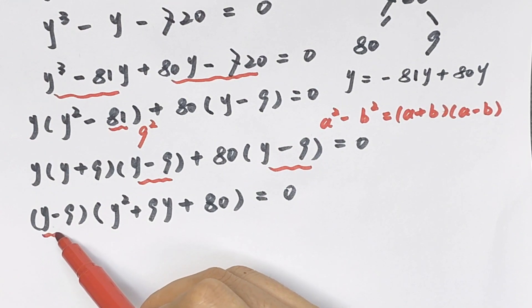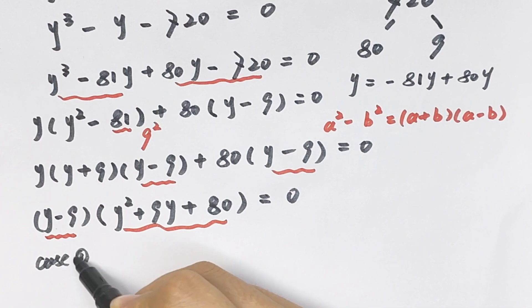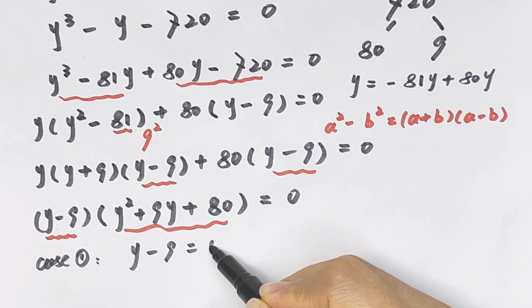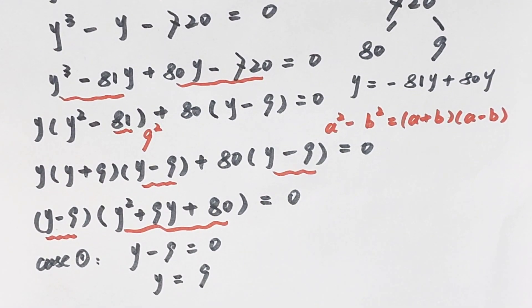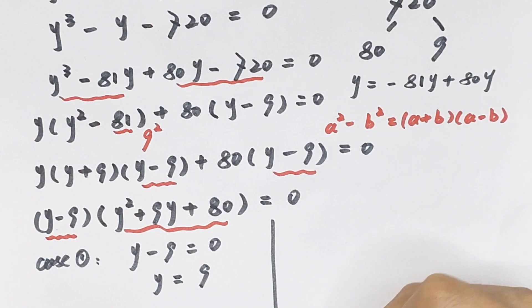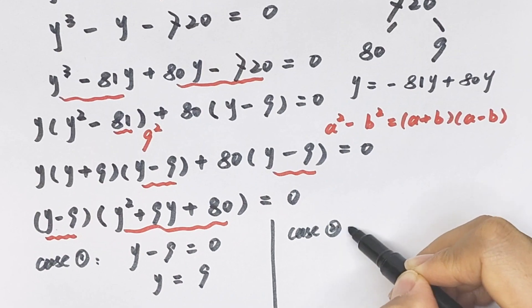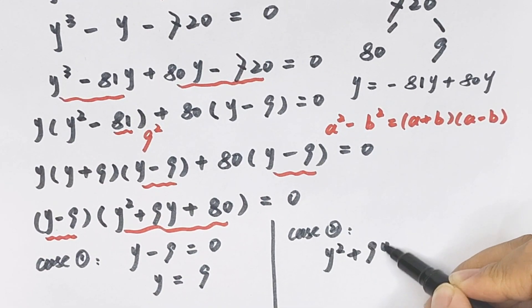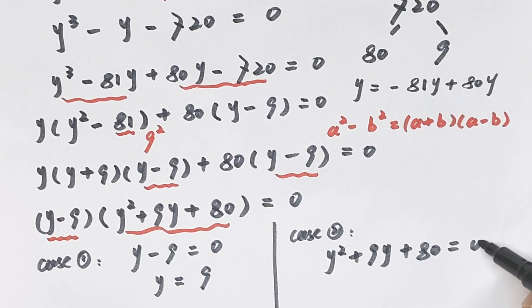We have two cases. Case 1: y minus 9 equals 0, so y equals 9.